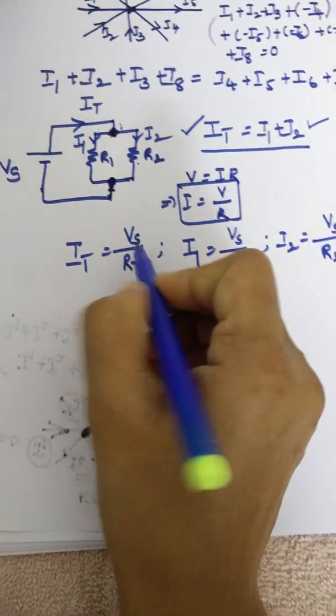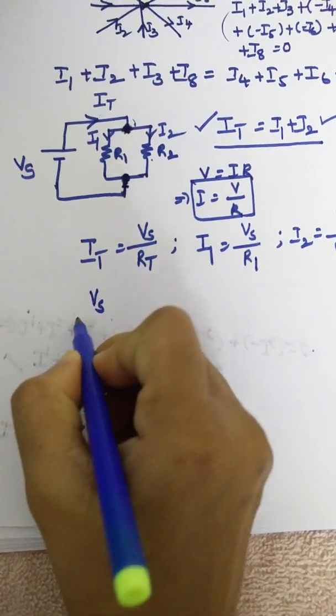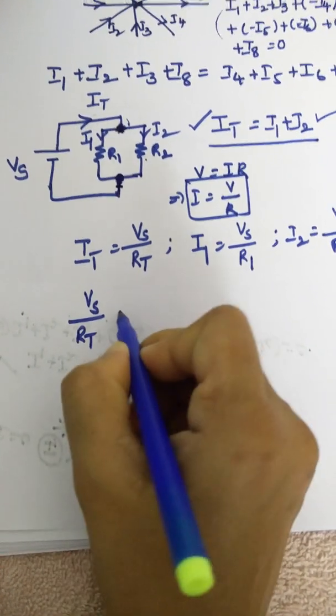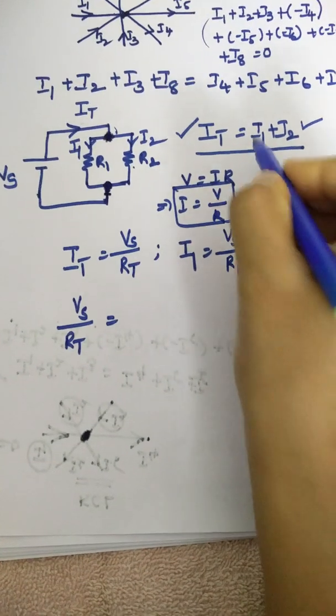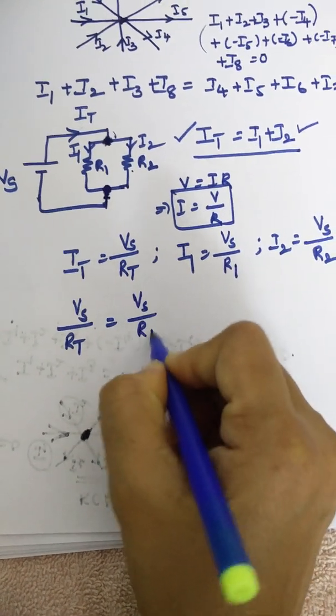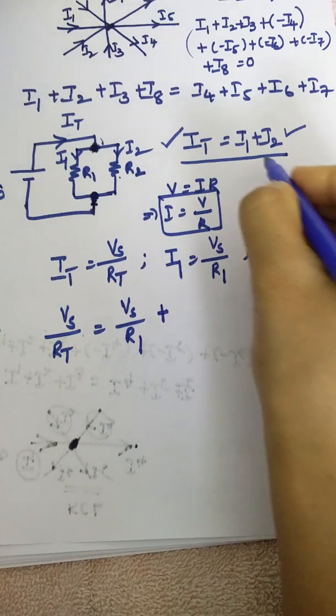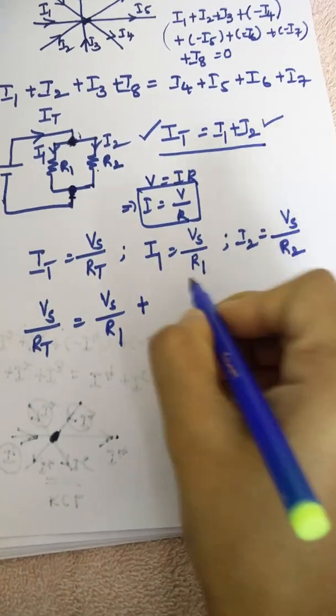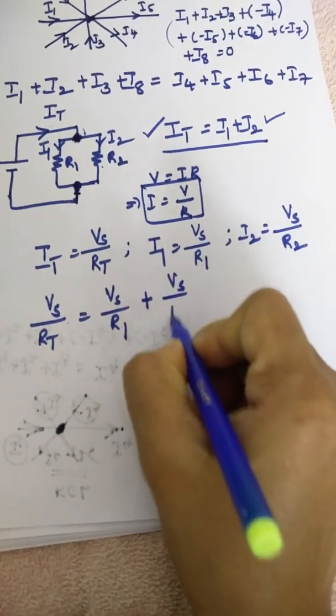Now we follow this equation. So what is It? This is Vs by Rt, which is equal to I1, which is Vs by R1. Plus I2. I2 is Vs by R2. So this is Vs by R2.